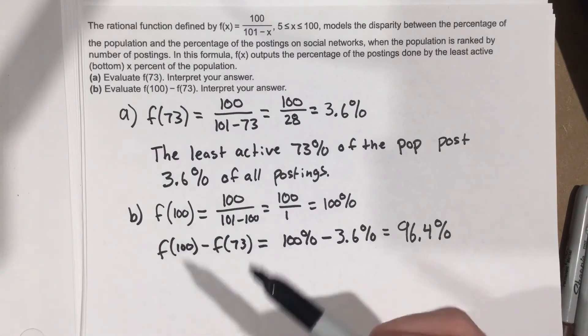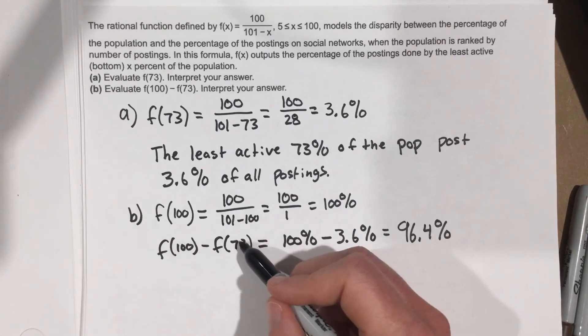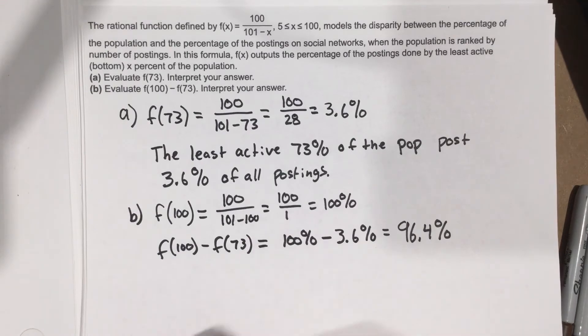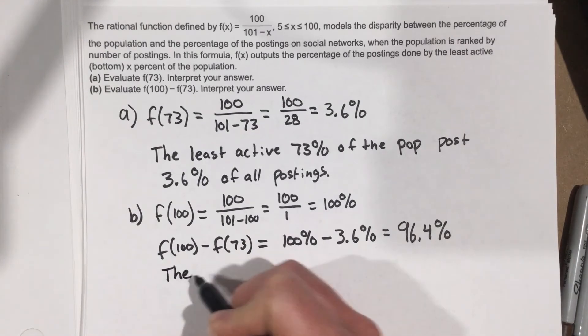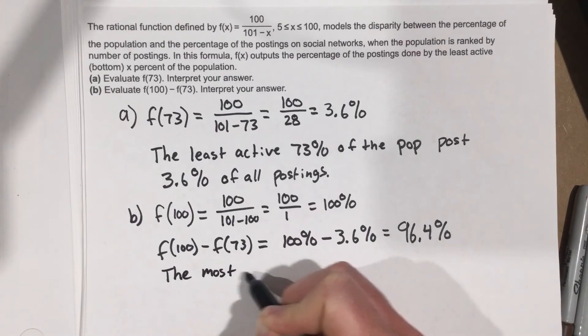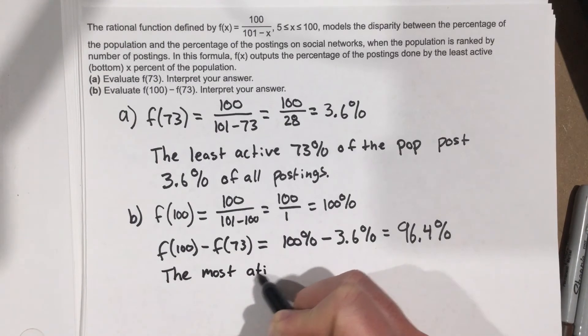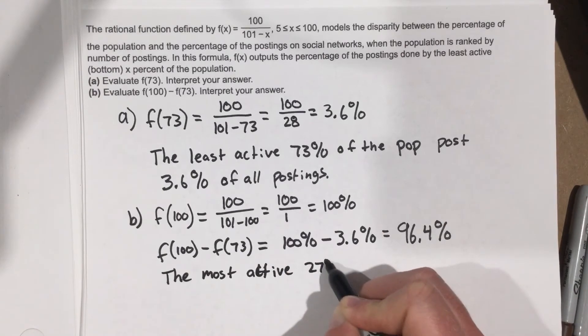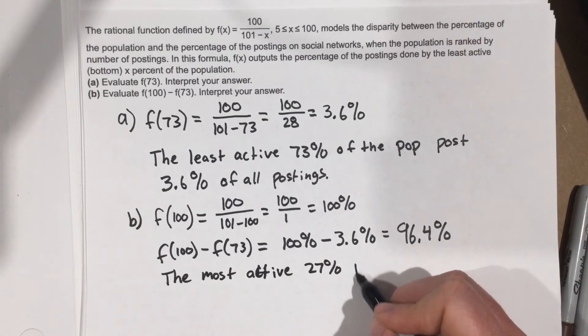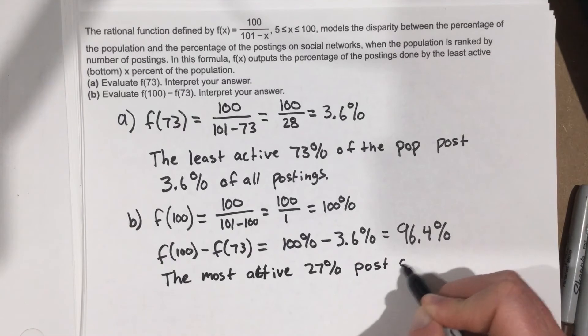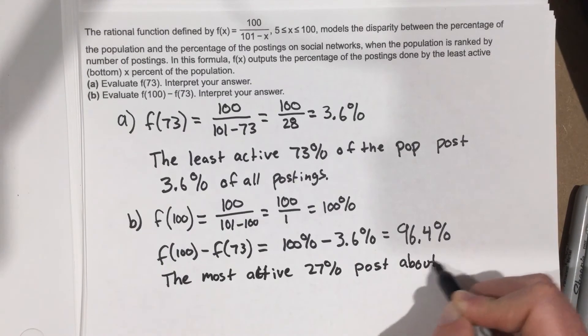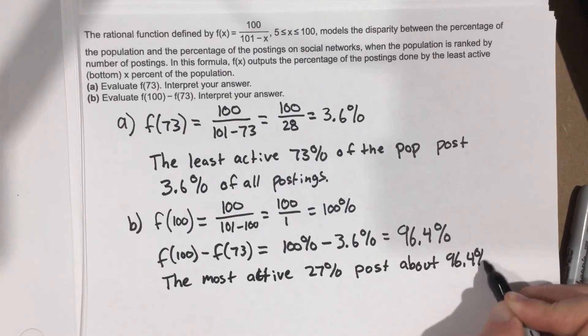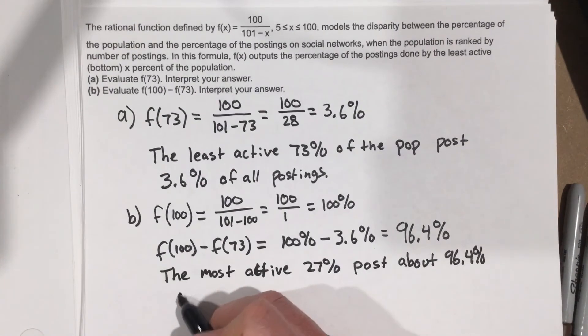This is 100% of the least active minus the 73%. So this would say that the most active 27% post about 96.4% of all postings.